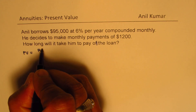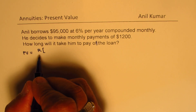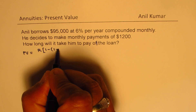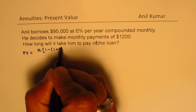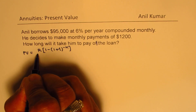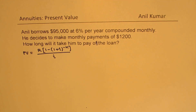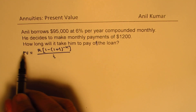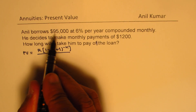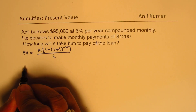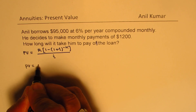This formula is very important to remember. r represents those recurring payments: r times 1 minus (1 plus i) to the power of minus n, over i. In this formula, the value of present value is given. The money borrowed is the present value, so the present value here is $95,000.